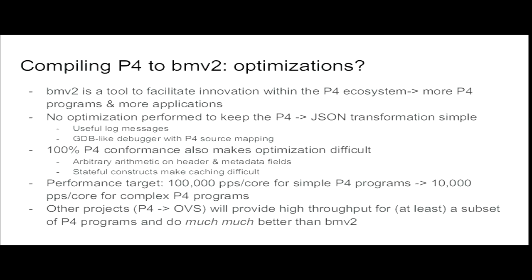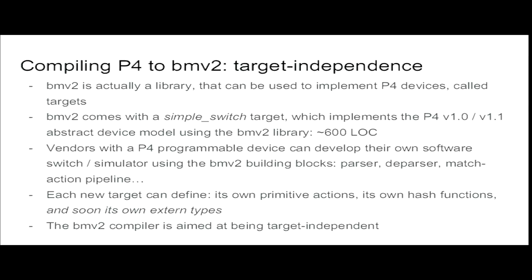You've heard about several projects like the OVS project from Oramed and the eBPF Intel project, which will give you the performance you want — but maybe you won't have all the P4 features covered by the spec. BMV2 is target-independent, and I encourage people who have an ASIC meant to be P4-enabled to implement their ASIC target using the BMV2 library to get similar behavior as the hardware. As a reference, we have a target called simple switch implemented in only 600 lines of code using the BMV2 library.